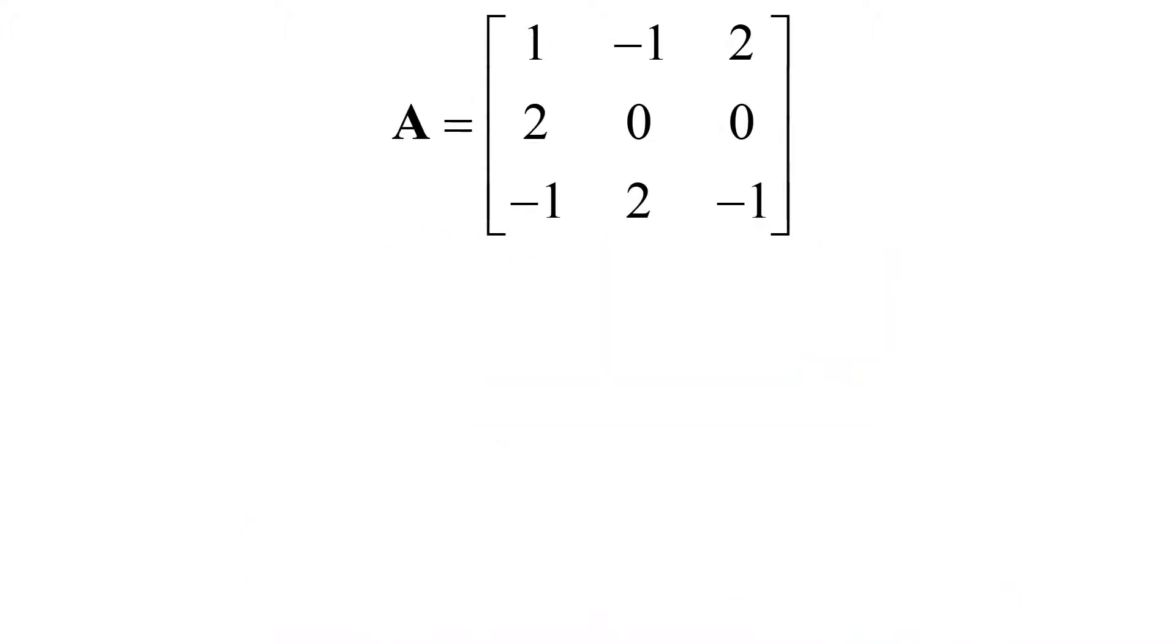If the first method is too difficult to understand, you can also use an alternative approach. Consider the same matrix A. To calculate the determinant of matrix A, you need to take three elements in the first row, which are 1, minus 1, and 2. You can write down these three numbers.